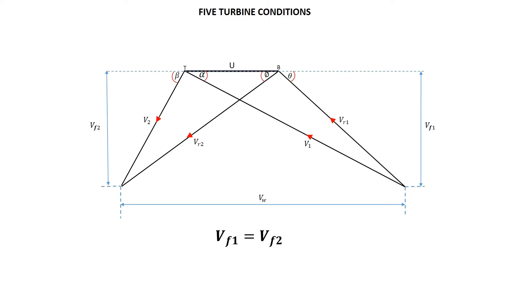Condition two is when they state that the blade is symmetrical. Symmetrical blade means that the blade inlet angle theta and blade outlet angle phi are both the same value.